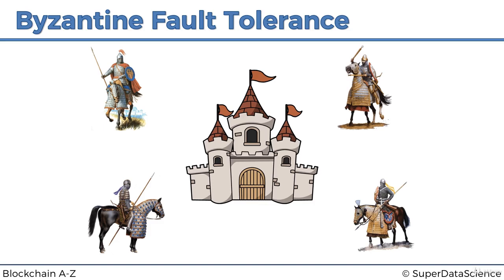They can only win if the majority of them come to a consensus on what to do — whether they attack or retreat. If three out of four say they're attacking and they attack, they'll win. If three out of four say they're retreating and they retreat, they'll all be safe. However, if they don't come to a consensus, they will be destroyed by the enemy.